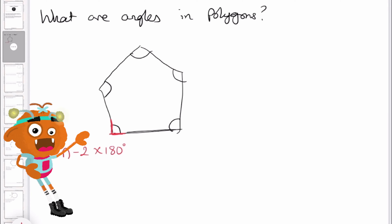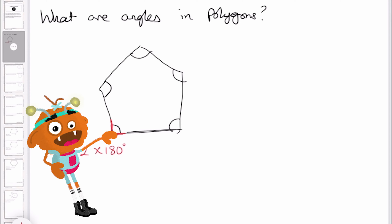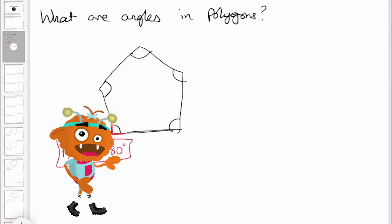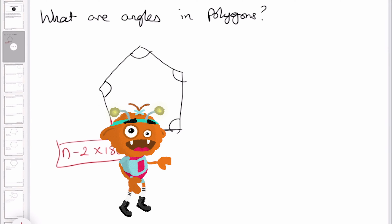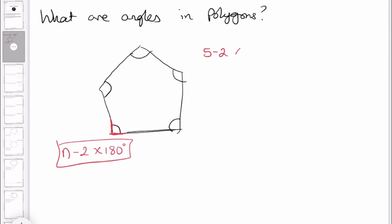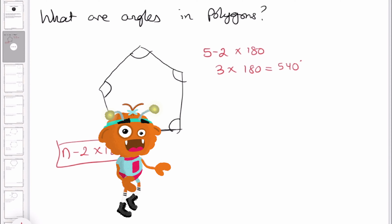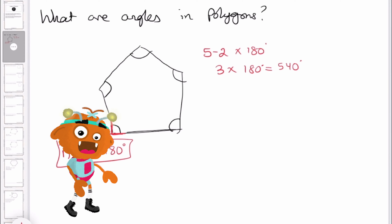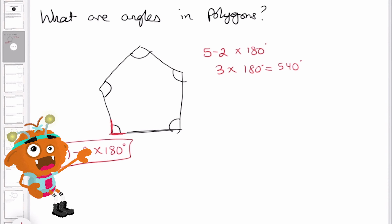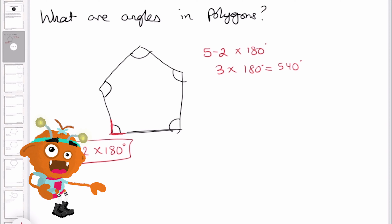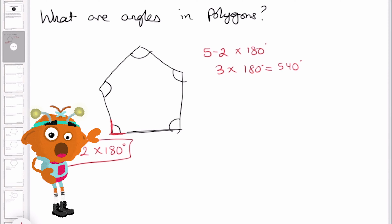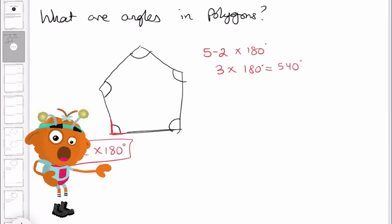For this pentagon, we have 5 minus 2 multiplied by 180, which is 3 times 180, giving us 540. So we now know that the total of the interior angles is 540 degrees.